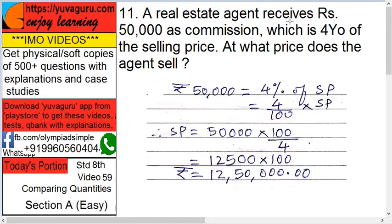A real estate agent receives 50,000 rupees as commission, which is 4% of the selling price. A real estate agent is basically a broker — if you want to sell your house, the agent finds a customer for you and receives this commission for finding the customer and making the deal happen.